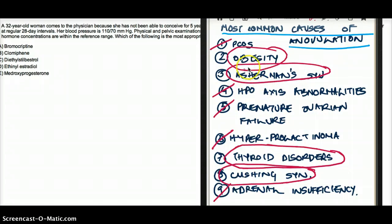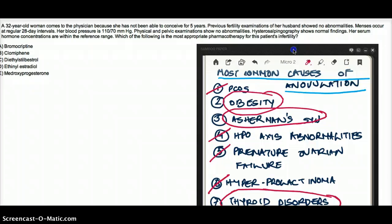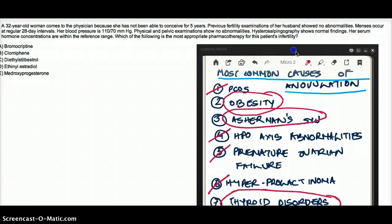Now we are left with these ones. Obesity—the question does not show any indication that the patient is obese. Asherman syndrome usually causes adhesions, and the egg will not be able to come to the uterus. But we do a hysterosalpingography, so even that is ruled out.